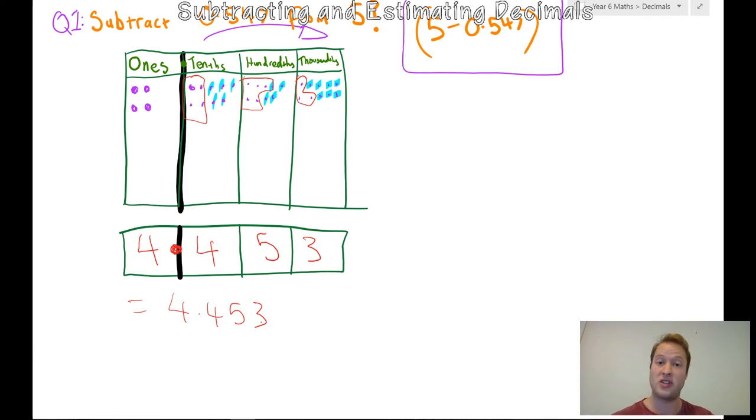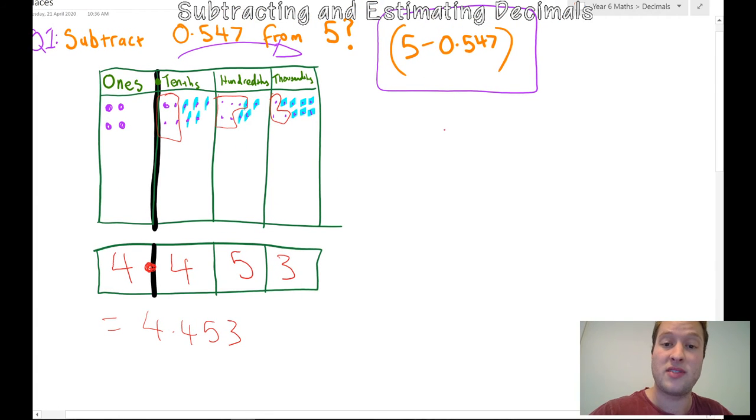Here's the second method, which is the vertical subtraction method. So I'm just going to go simply five take away 0.547. So here I need to put in my decimals. 5, 4, 7. So up here it'll be helpful if I do zeros so that I have my place value right. I've got my tenths, my hundredths, my thousandths.